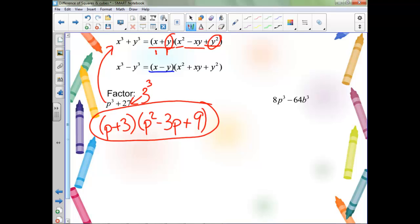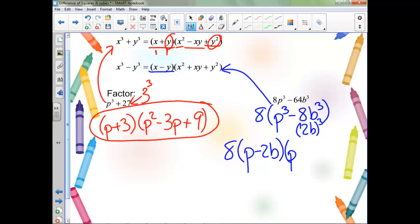On this second one, notice first we can factor an 8 out from both of these, and now this is 2b cubed right here, so we'll have this 8 out front, but we're still following this pattern. So we'll have p minus 2b, and then our first term squared, plus our first term times the second term, plus the second term squared, so 4b squared.